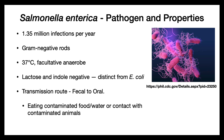However, it is both lactose and indole negative, and that makes it distinct from E. coli — it's one of the tests you can do to distinguish it. Its transmission route is also fecal to oral, and you get it by eating contaminated food or water or contact with contaminated animals, such as chickens or turtles.